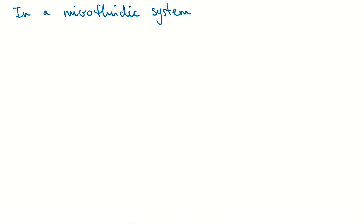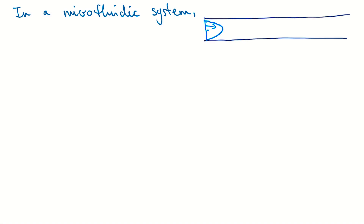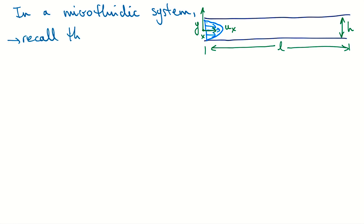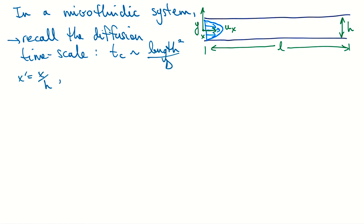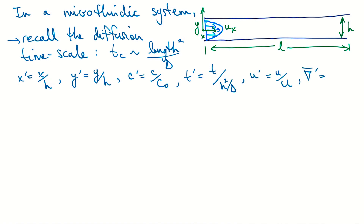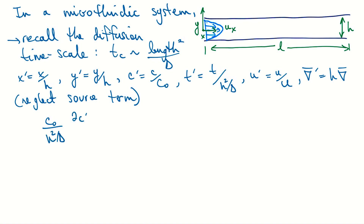Looking at this in the context of a microfluidic system: we sketch our geometry — channel walls, x and y axes, flow in the x-direction, and the channel height. Our diffusion time scale, the characteristic time, is length² / D. We non-dimensionalize the advection-diffusion equation and neglect the source term — the source would just be a point source of dye, for example — and see where that takes us.